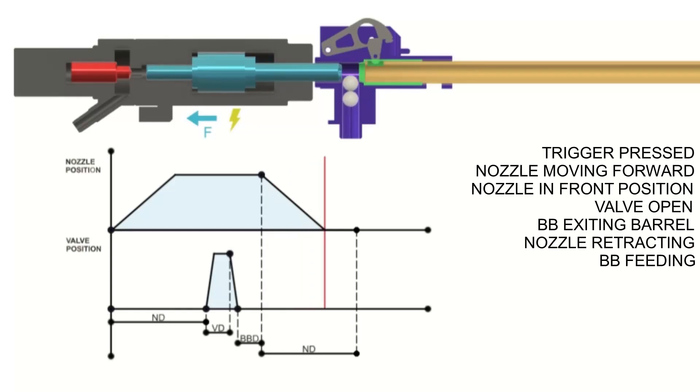We can also see that BB is slowly being loaded inside the hop-up chamber. The nozzle is already in the back position. However, it is safe to have some safety margin in case the battery voltage is low, so the nozzle stays in back position and waits for the BB to be loaded fully.